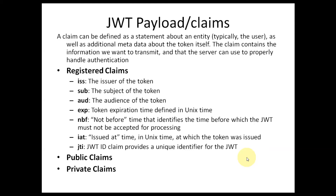You can use 'payload' and 'claims' interchangeably for JWT, because the payload usually carries the claims. Claims are the information we want to send over the wire to the receiver — for example, the user's email ID, department name, or social security number. All those things can be sent as part of the JWT token as a claim.